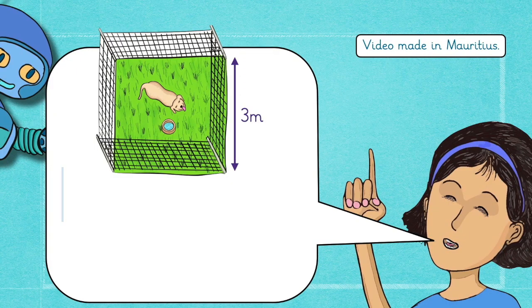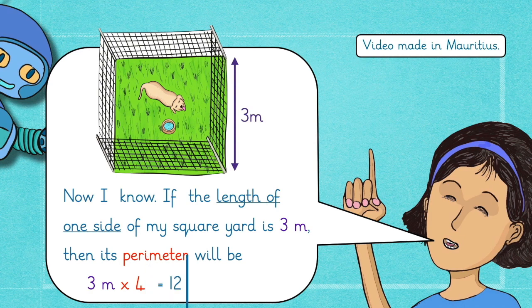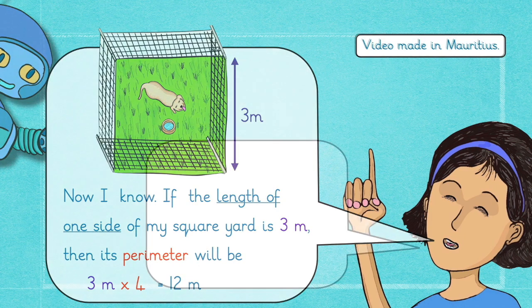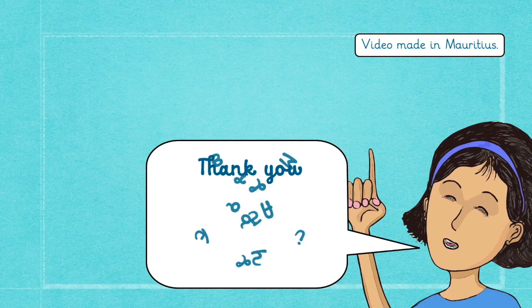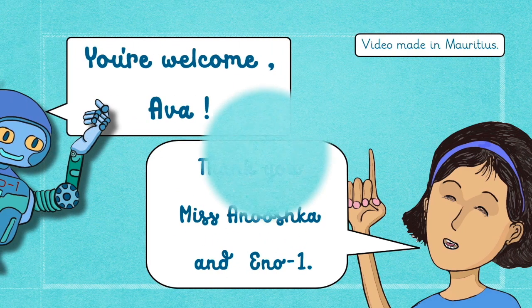Thanks, Miss Anoushka, Inouane. Now I know. If the length of one side of my square yard is 3 m, the perimeter will be 3 m times 4 which is equal to 12 m. Thanks, Miss Anoushka, Inouane. You're welcome, Ava.